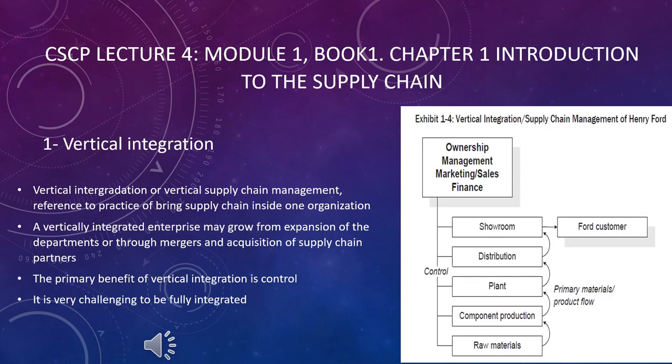Vertical integration or vertical supply chain management refers to the practice of bringing the supply chain inside one organization. For example, Henry Ford, a car manufacturing company, used to source its iron ore as raw material, make all its components, manage its own plant, its own distribution centers, and showrooms — from raw material to the showroom, everything was managed by Henry Ford.